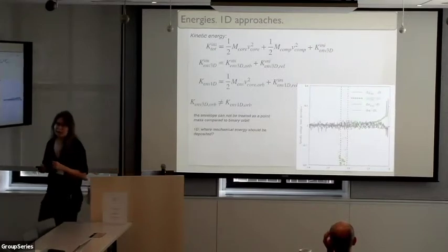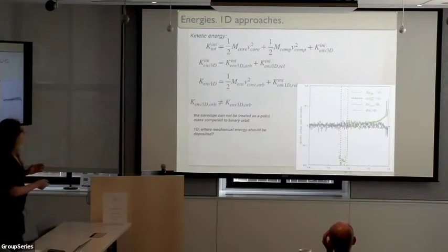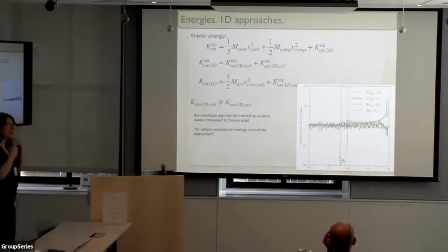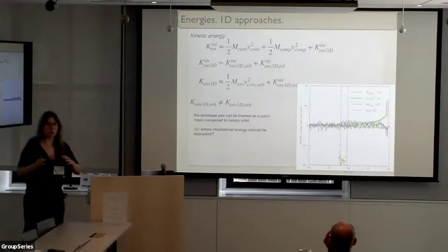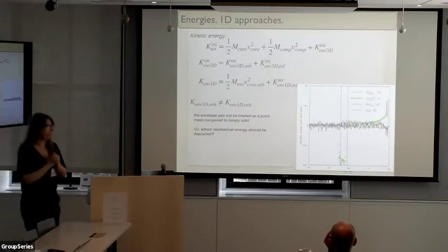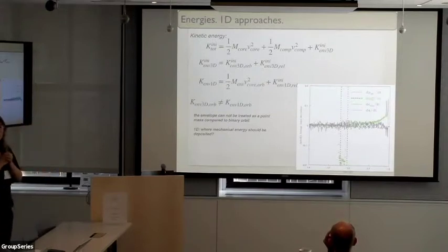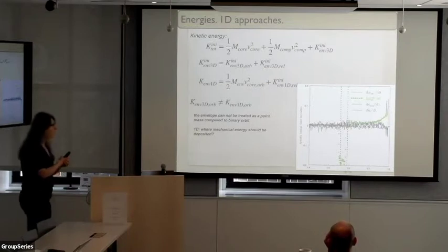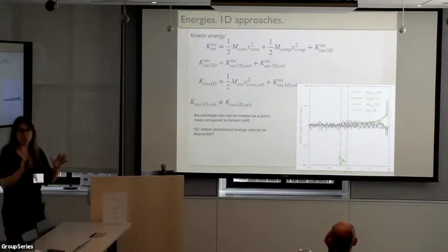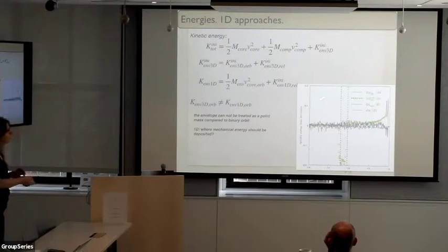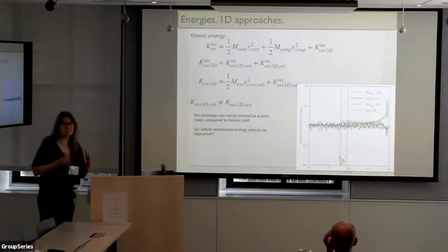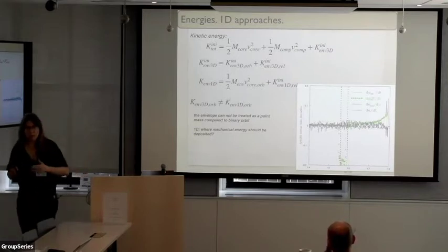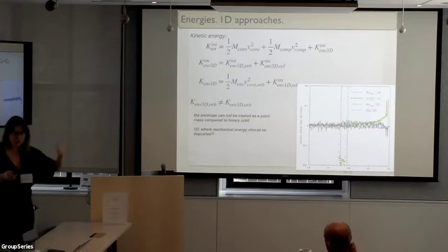Kinetic energy is a bit easier. You can write it in components and in principle calculate it properly in a 1D code assuming some Roche-lobe approximation. The problem is you don't really know where to put that energy in. I've been placing it according to all recipes — mainly around or inside the orbit — but if I look at what my 3D code does, it's not the way it really works. It usually works outside, which is very counter-intuitive.